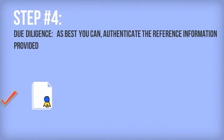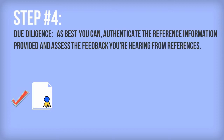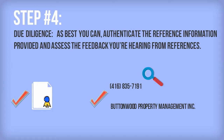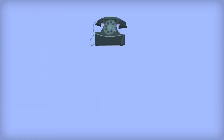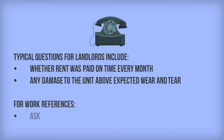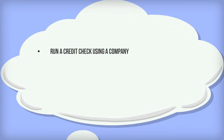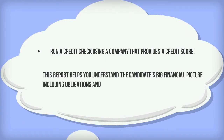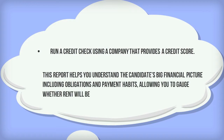Step 4: Due Diligence. As best you can, authenticate the reference information provided and assess the feedback you're hearing from references. Do a little investigative work by looking up phone numbers to ensure they correspond to the names and organizations you've been given. When calling a landlord, try to start the conversation with 'I'm calling about your rental unit' — if a friend is offered to stand in as a landlord reference, this question tends to be enough to catch them off guard. Typical questions for landlords include whether rent was paid on time every month and about damage to the unit above expected wear and tear. For work references, ask employers about the length of the candidate's employment and if the job is expected to continue. Run a credit check using a company that provides a credit score, even if the candidate has provided their own. This report helps you understand the candidate's big financial picture, including obligations and payment habits, allowing you to gauge whether the rent will be paid on time.